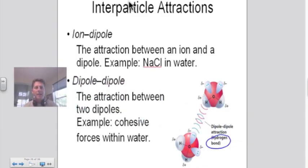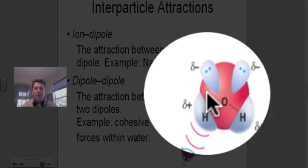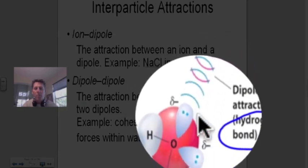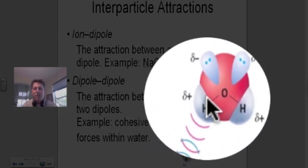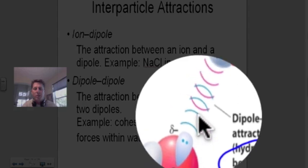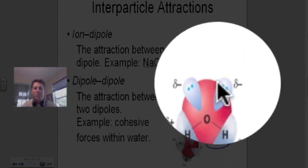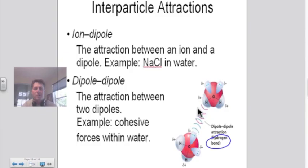The second type is a dipole-dipole attraction. As we look at water molecules being attracted to other water molecules, it's the positive partial charge on one that's attracted to the negative partial charge on another. So these are two different water molecules being attracted to each other — a dipole here and a dipole here. This is known as a hydrogen bond.